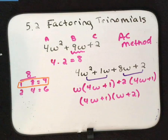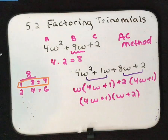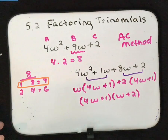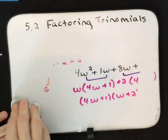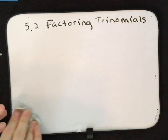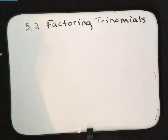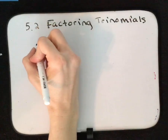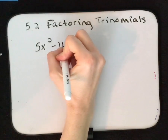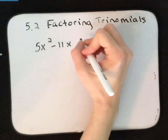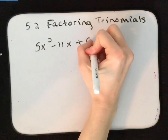There are multiple different ways to go about factoring — guess and check, box method — but the good part about using the AC method is it works every single time. You can use it anytime you're trying to factor a trinomial. Let's try again with 5x squared minus 11x plus 6.